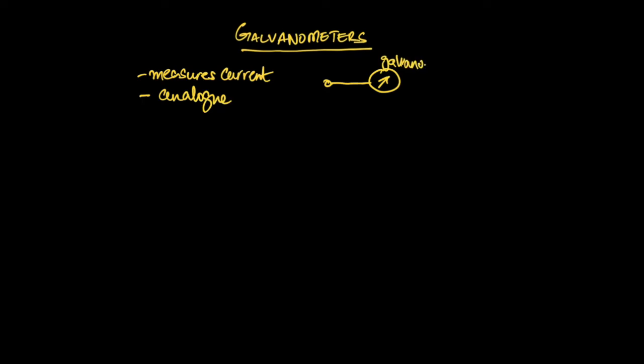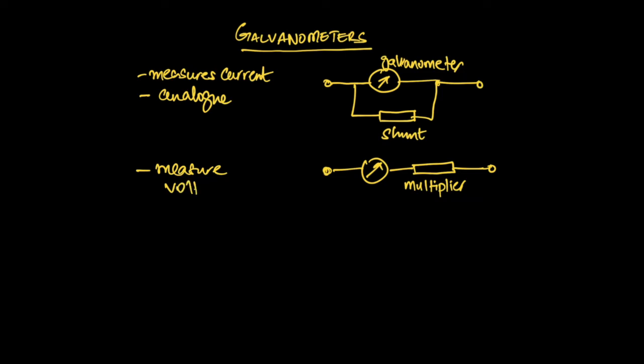So you have a galvanometer which has been turned into an ammeter by way of applying a resistor here, which is sometimes called a shunt. So if you put the resistor in parallel with the galvanometer, you've basically turned it into an ammeter. There is another application of this as well. If you basically change this up and you put the galvanometer in series with this resistor, this resistor then becomes called a multiplier, and it essentially now allows you to measure voltage.